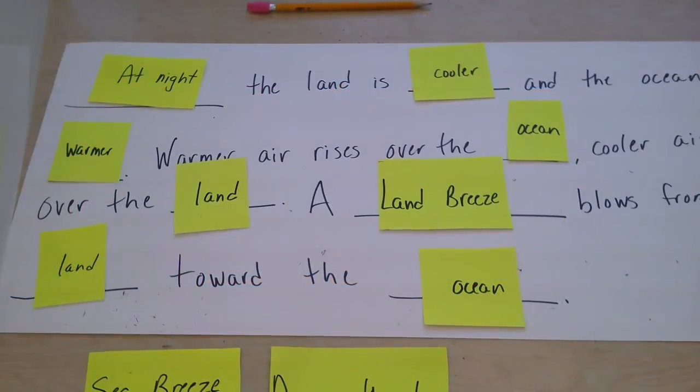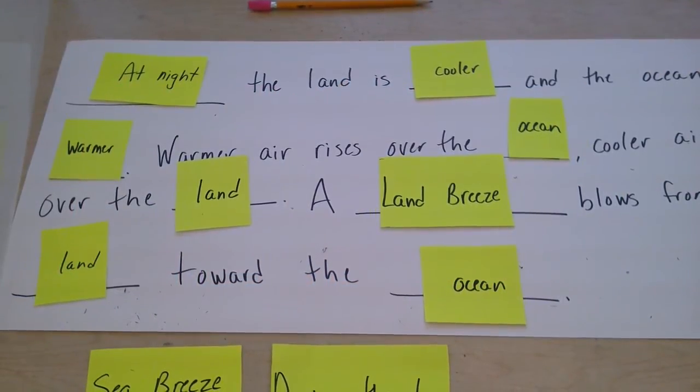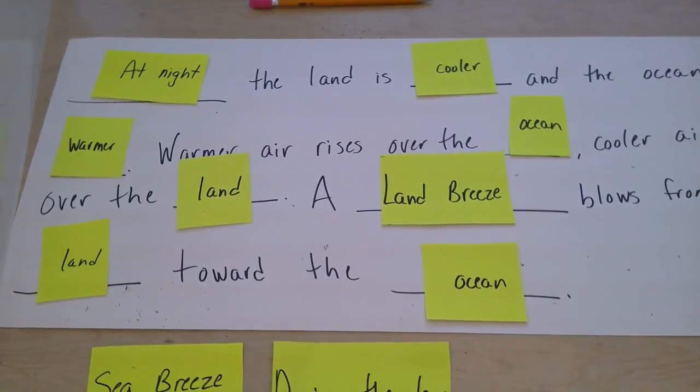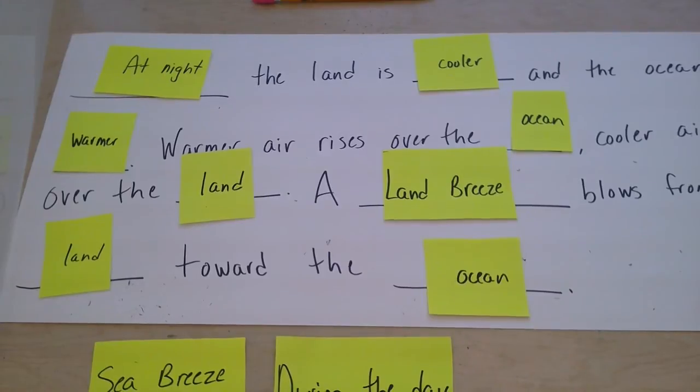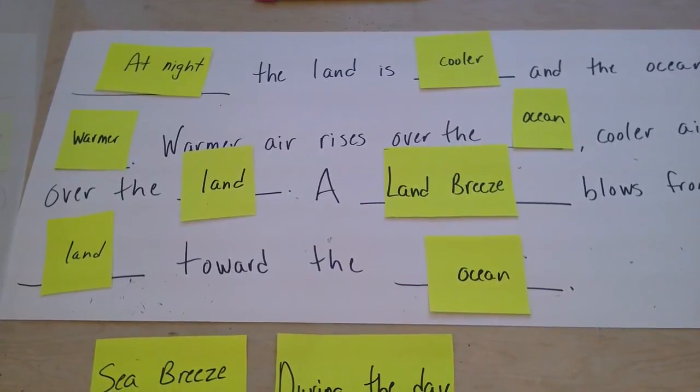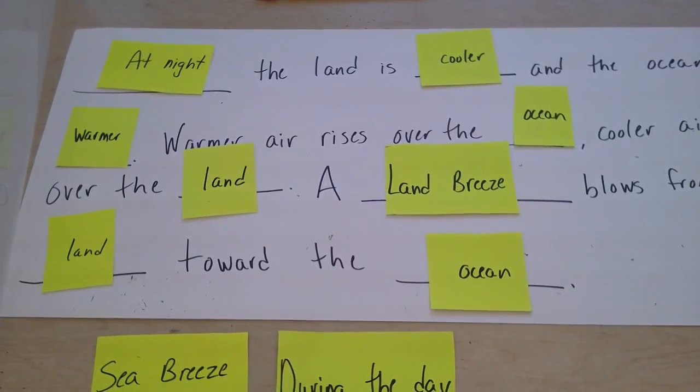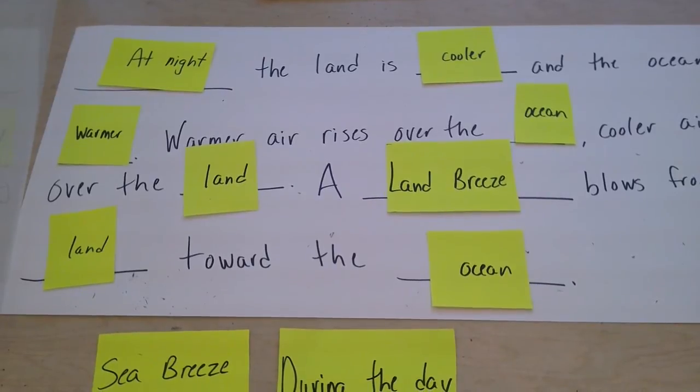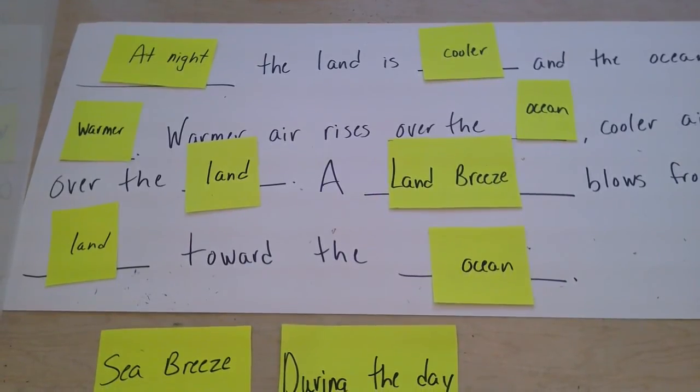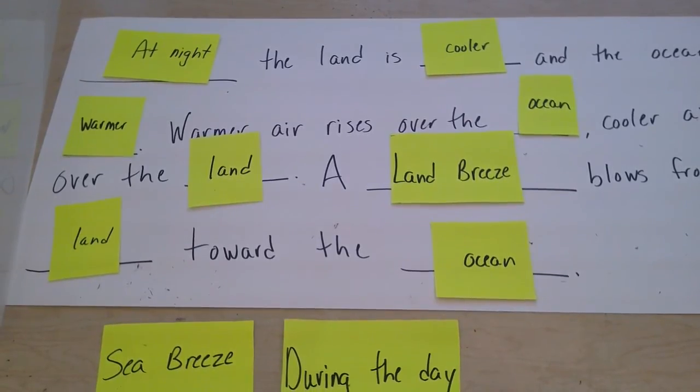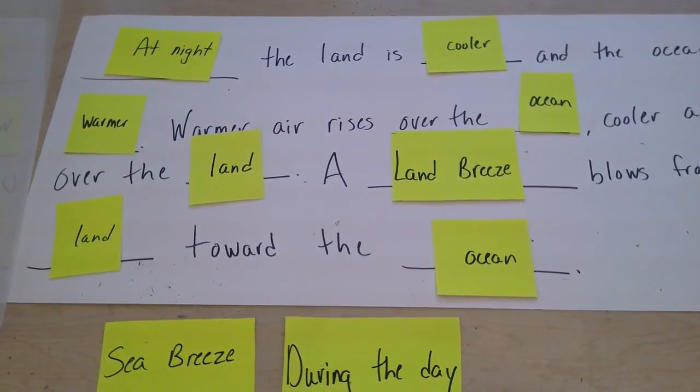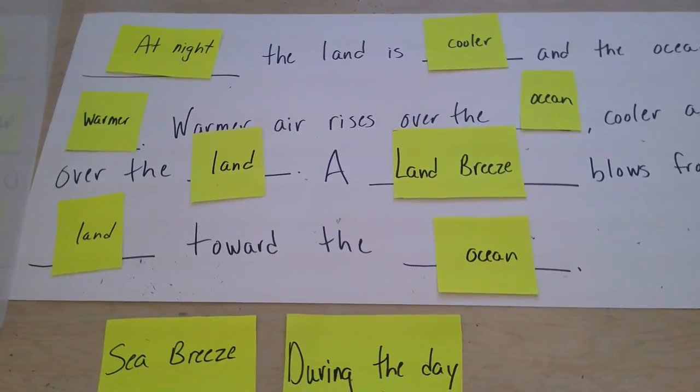To help my students review, I made a fill-in-the-blank poster for each table. I have put the important words on bright paper. When they start with at night, that will determine what all of the other blanks will be filled in by. At night, the land is cooler and the ocean is warmer. The warm air rises over the ocean, cooler air over the land, a land breeze blows from land to the ocean.